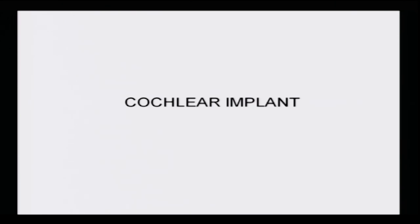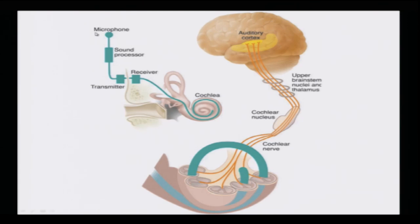The cochlear implant, as I mentioned earlier, was the first success story of mankind in terms of neural engineering and neural prosthesis. It works like this: you have a microphone, a sound processor, a transmitter, and a receiver. The signal is fed into the cochlea, connected to the cochlear nerves, which carry the signal to the auditory cortex.